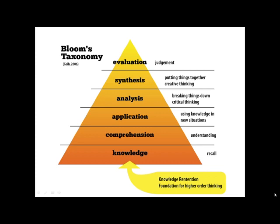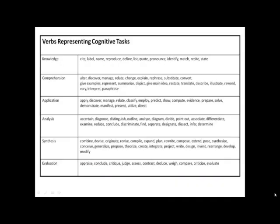These are the six steps of the cognitive domain: knowledge, comprehension, application, analysis, synthesis, and evaluation. The verbs representing the cognitive domain for knowledge include: cite, label, name, reproduce, define, list, pronounce, identify, match. These verbs are used in writing specific objectives.